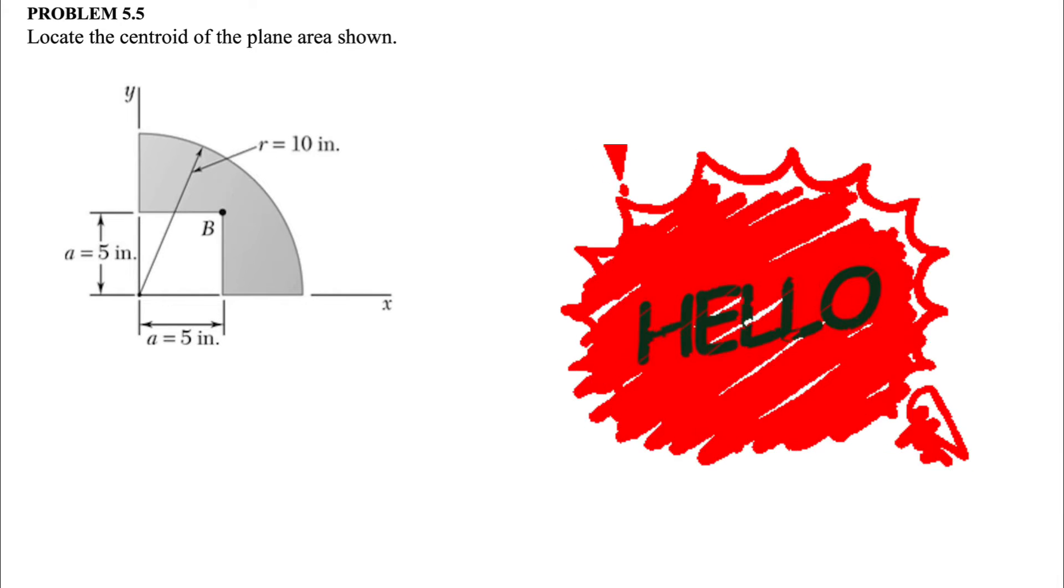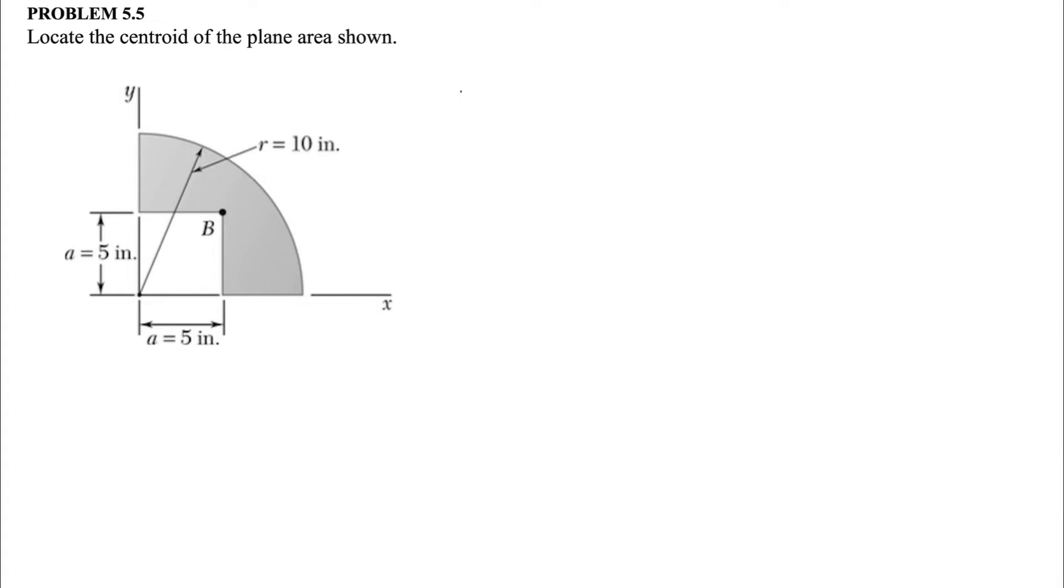All right guys, welcome back. In today's question we need to find the centroid of the plane area as shown. If we look at this, we'll see that we have a quarter circle and a small square inside. At the end, what we need to find is the shaded area, which will be basically the quarter circle minus the square that we have.